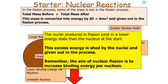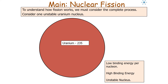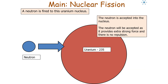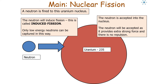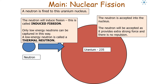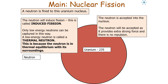The aim of nuclear fission is to increase the binding energy per nucleon. To understand how fission works, consider one unstable uranium nucleus: a neutron is fired at it and accepted into the nucleus, because the neutron provides an extra strong force with no electrostatic repulsion. This neutron induces fission — we call it induced fission. Only low energy neutrons can be captured this way; we call a low energy neutron a thermal neutron because it is in thermal equilibrium with its surroundings.